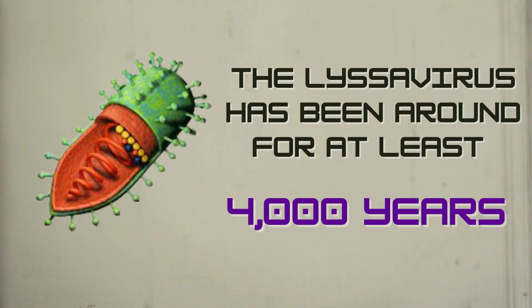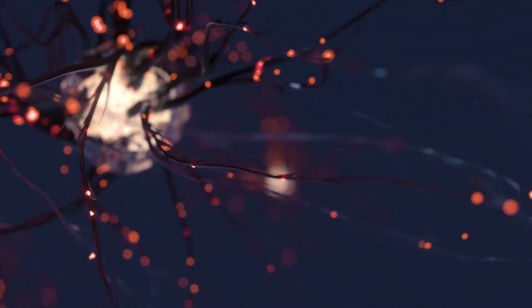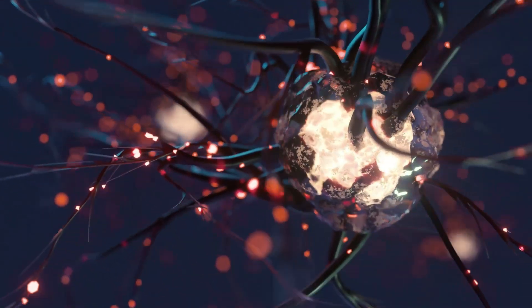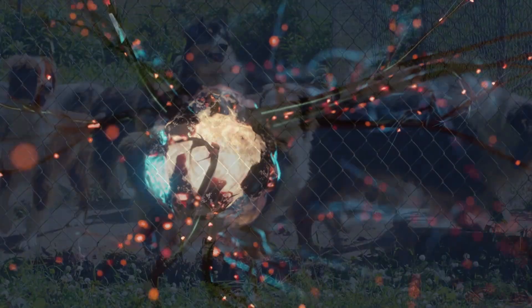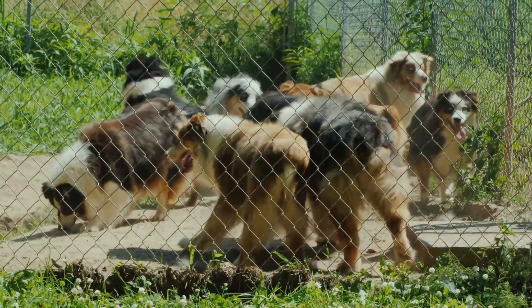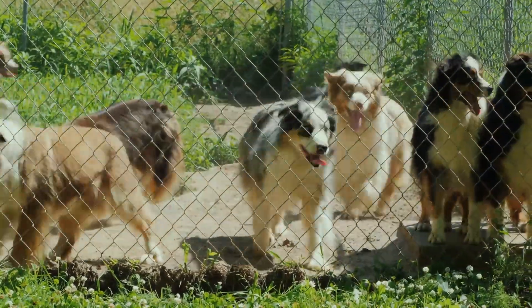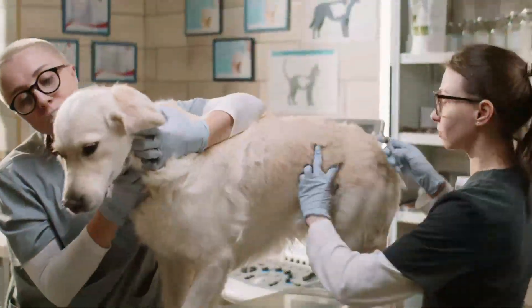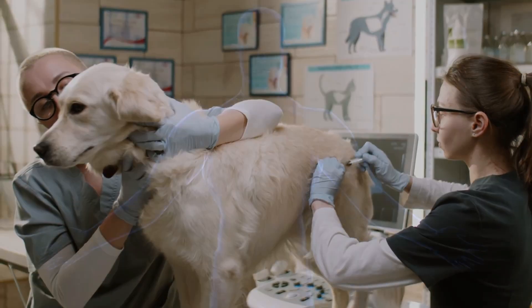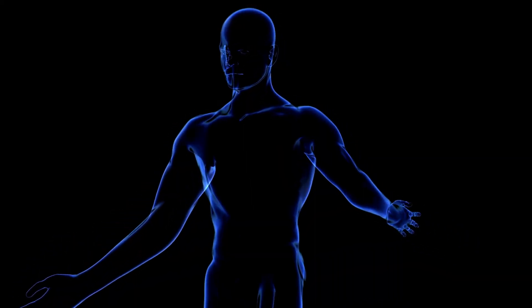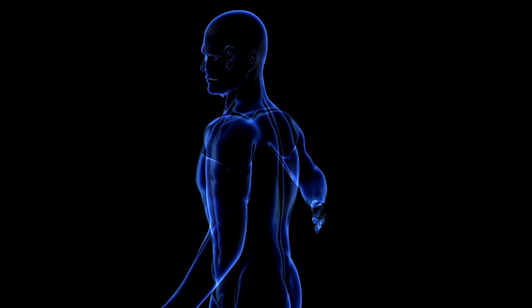Lyssavirus has been around for at least 4,000 years. Beyond the fact that it is strange and lethal, the infection intrigues us due to our inability to stop it. A virus needs only a few genetic instructions and a few living cells to replicate. Lyssavirus has both of these in spades, as it can easily infect any mammal. Even if we could find a way to vaccinate every animal on earth, Lyssavirus would still find a way to infect us — a hidden enemy lurking in the shadows, waiting to strike.